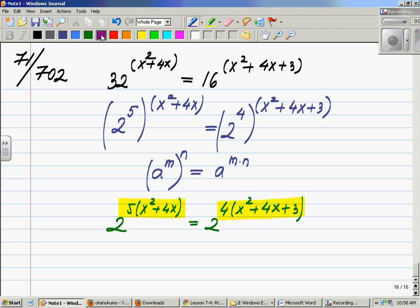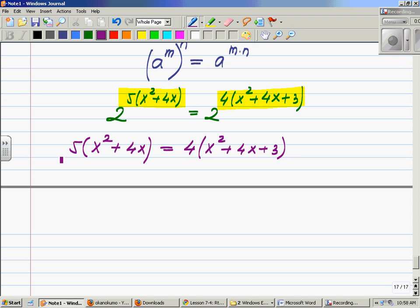Now I have to find for what values of my x this 5 times x squared plus 4x will equal 4 times x squared plus 4x plus 3. Very good. Moving on, first step, multiply by 5 and by 4: I have 5x squared plus 20x equals 4x squared plus 16x plus 12.